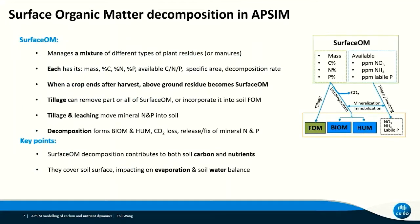A further point of attention is the decomposition of the surface organic matter in EPSIM. This is handled by the surface OM component. Surface OM can manage a mixture of different types of plant residues or manures. Each can have its own mass, nutrient contents in organic and mineral forms, specific area, and decomposition rate constant. When a crop is ended after harvest, its above-ground residue becomes surface organic matter, and the root residue becomes fresh organic matter in the soil. Different tillage options can be used to remove a fraction of surface organic matter or incorporate it into soil to become FOM. Decomposition of surface organic matter forms new BOM and new HUM, releases CO2, and also releases or fixes mineral nutrients such as nitrogen and phosphorus.